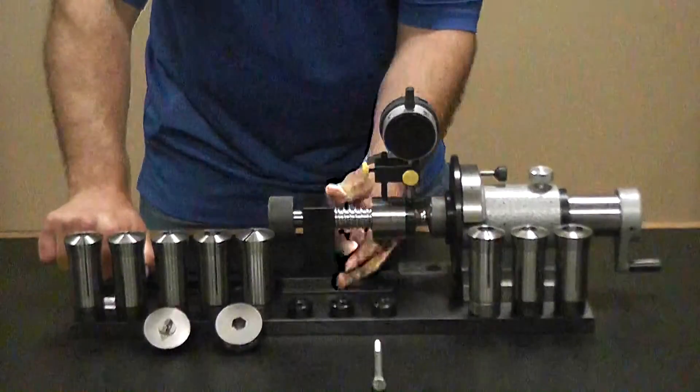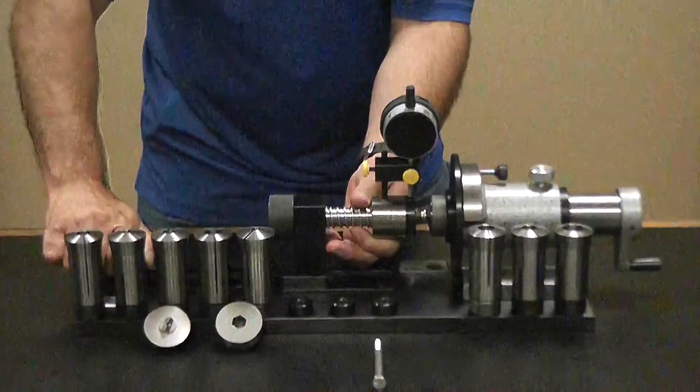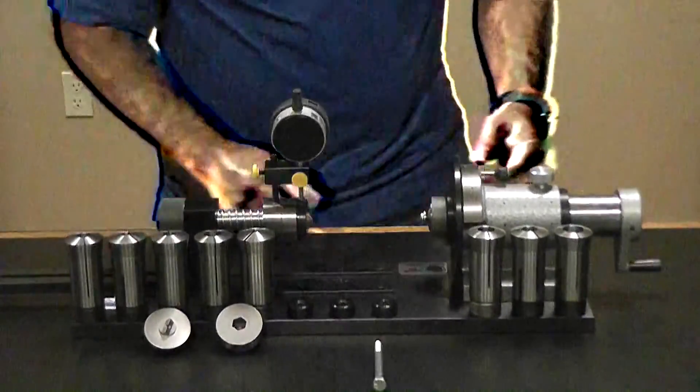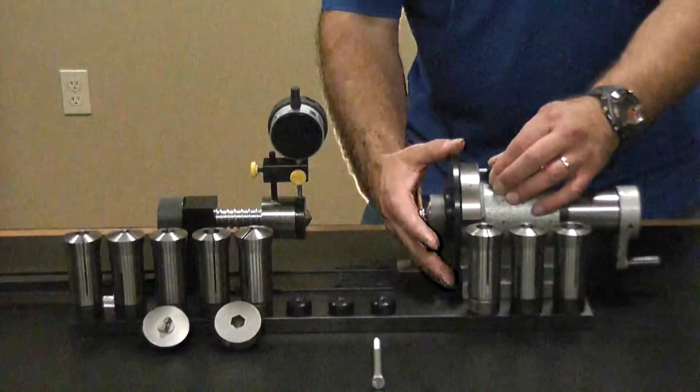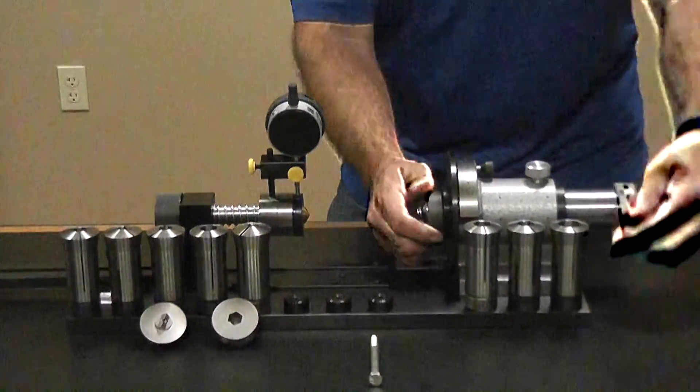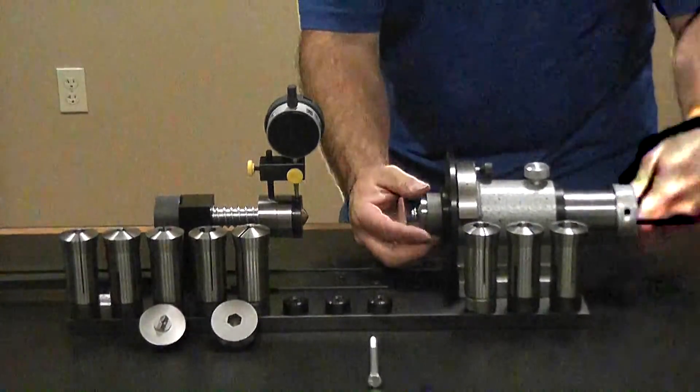We undo our thumb screw, which releases the pressure. We back that off. We slide our pin back into our indexing wheel and we rotate until this comes loose.